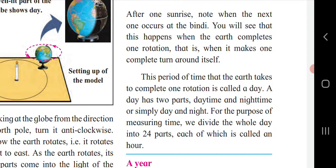The period of time that the earth takes to complete one rotation is called a day. Each day is divided into 24 equal parts for the purpose of measuring time, and each part is called an hour. We can say 24 hours make one day — approximately 12 hours of day and 12 hours of night, though this may change according to season.